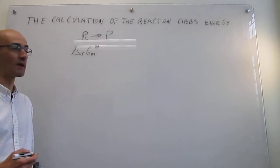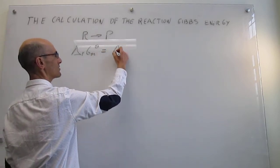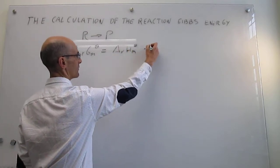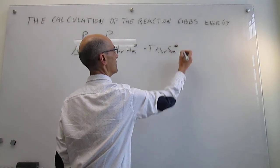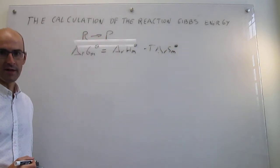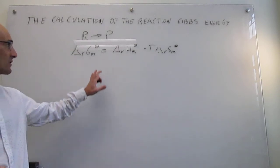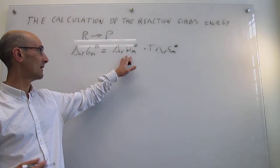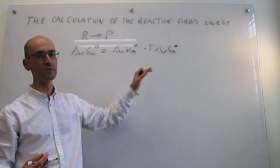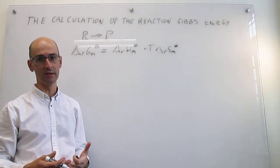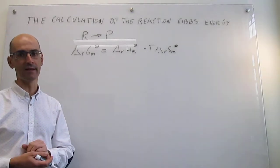One method uses the definition of the Gibbs energy as a relationship between the enthalpy of the reaction and the entropy of the reaction: ΔG° = ΔH° - TΔS°. This is a perfectly good way to calculate the reaction Gibbs energy for any given reaction under standard conditions. Generally, data for these state functions are provided at 298 K, so you would also be getting the reaction Gibbs energy at 298 K.